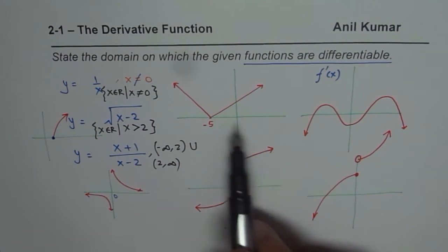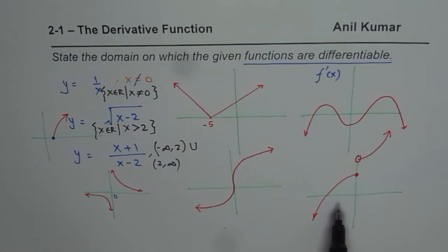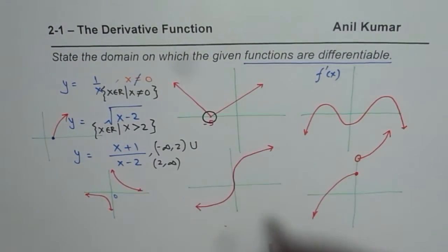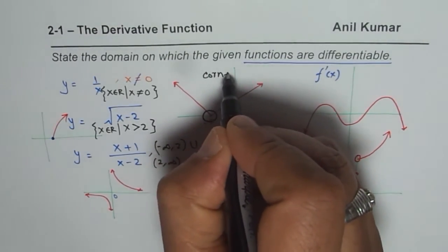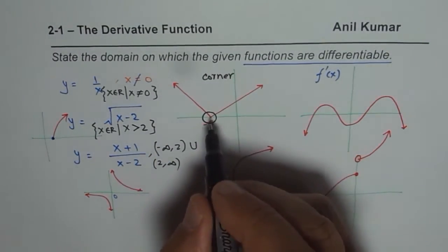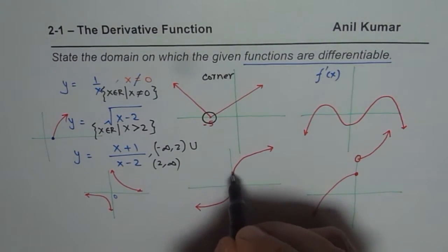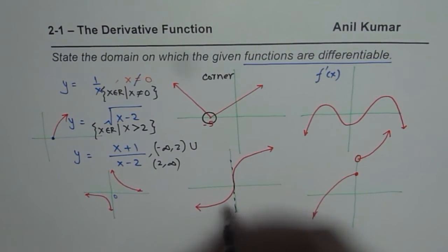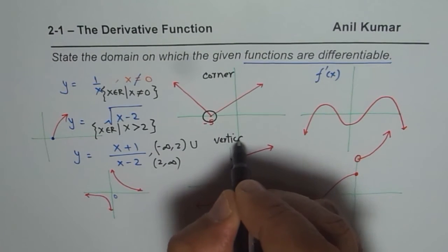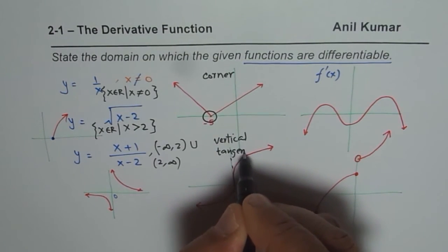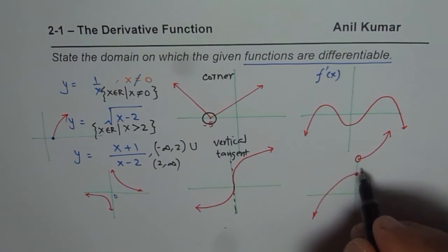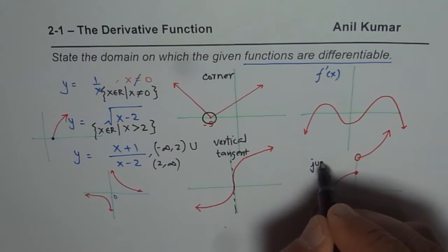Using this concept, you can write answers for the sketch examples too. For the absolute value function, the point where it is not differentiable is the corner — at a corner, the derivative is undefined but the function is differentiable everywhere else. For the cube root function, there is a vertical tangent at x equals 0, and a vertical tangent means the derivative is undefined. So it is not differentiable at x equals 0 but is differentiable in the rest of its domain.